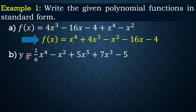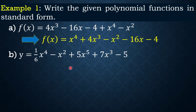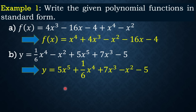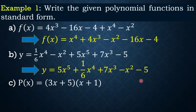Another example: y = (1/6)x⁴ − x² + 5x⁵ + 7x³ − 5. Don't be distracted by fraction or decimal coefficients — focus on the exponents. Arranging in decreasing order gives: 5x⁵ + (1/6)x⁴ + 7x³ − x² − 5.